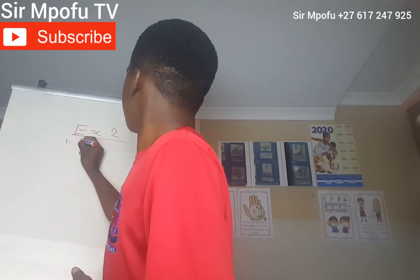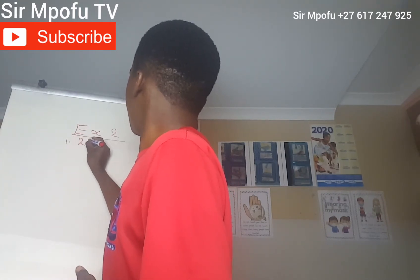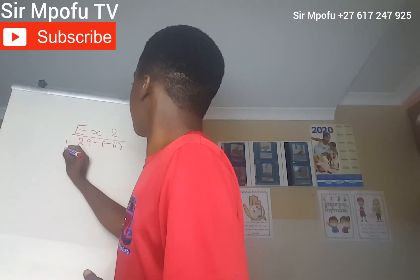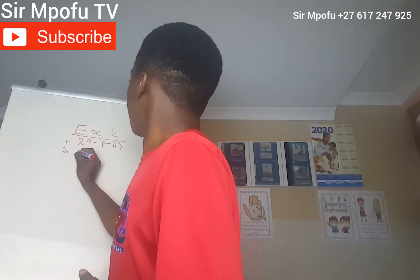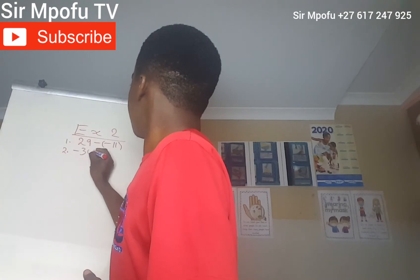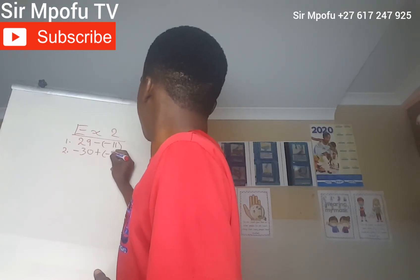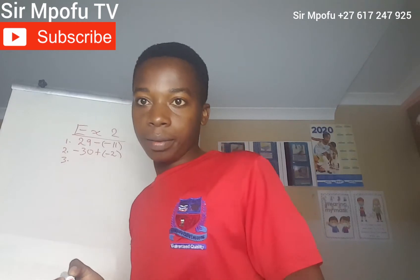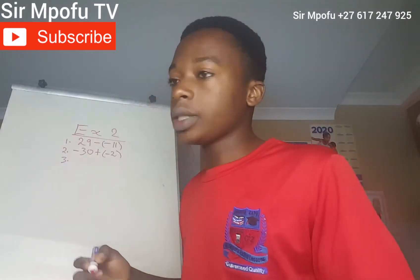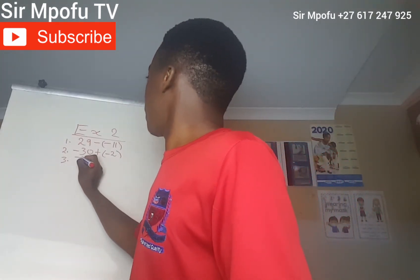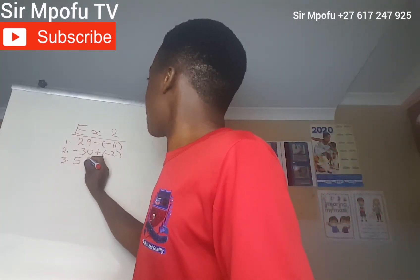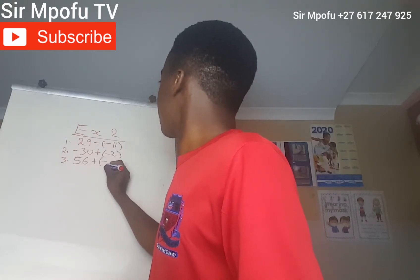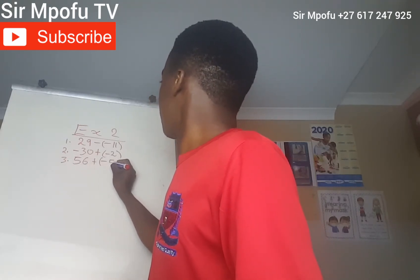Number 1: 29 minus minus 11. Number 2: minus 30 plus negative 2. Number 3: 56 plus negative 56. I hope that is clear.